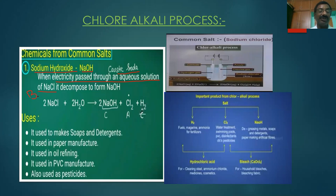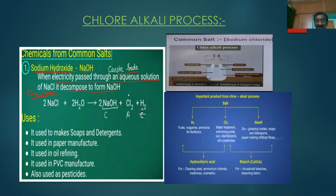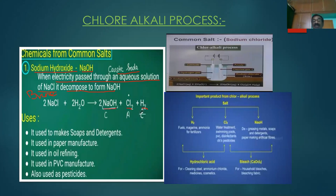An aqueous solution of NaCl is called brine solution. When electricity is passed through brine solution, it decomposes to form Sodium Hydroxide. So Sodium Hydroxide is obtained from common salt. When electricity is passed through an aqueous solution of Sodium Chloride, we get Sodium Hydroxide, Chlorine (Cl2), and Hydrogen — three compounds are formed. This is known as electrolysis of brine solution.